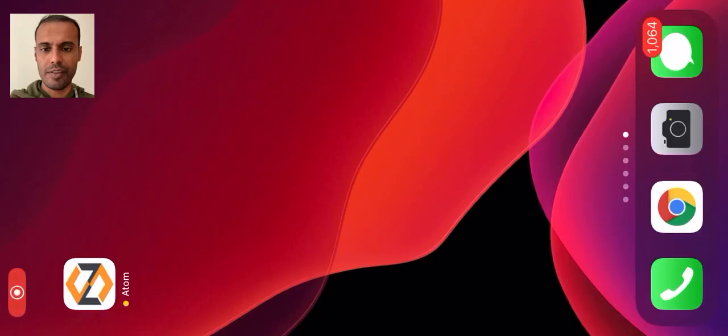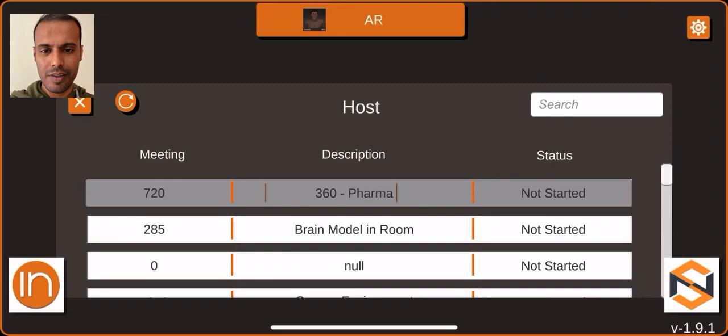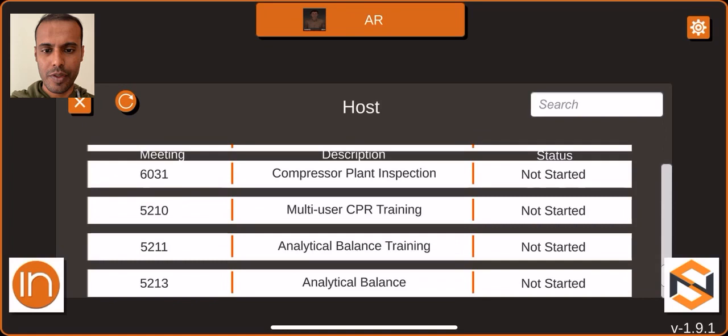Okay, let's open the Atom app. It shows several training environments already created on the platform. Let's just go to the one that we wanted to show, which is an analytical balance training module.